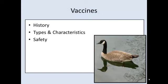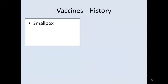Under the category of vaccines we're going to talk about history, types and characteristics, and safety. The history of vaccines is also the history of smallpox, because that was the first disease that we were able to create a vaccine — an artificial active immune response.